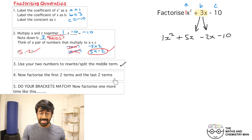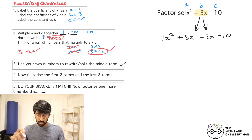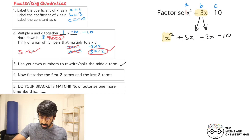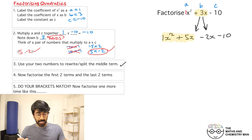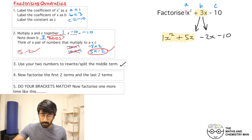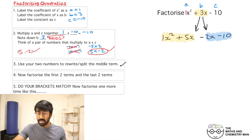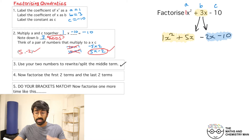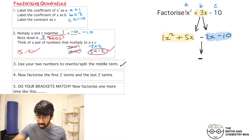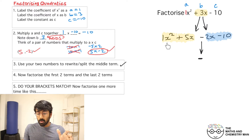Now step four says to factorize the first two terms and the last two terms — be careful with this part, you've got to pay attention. I'm going to highlight the first two terms in yellow and the last two terms in blue. The minus sign in the middle — I'm just going to bring it downwards and pop a minus down there.